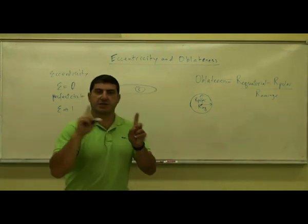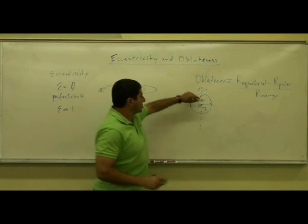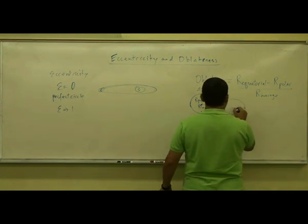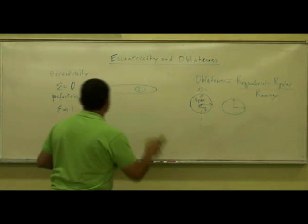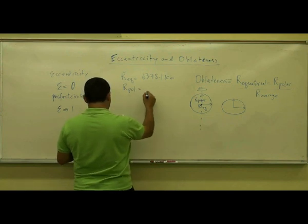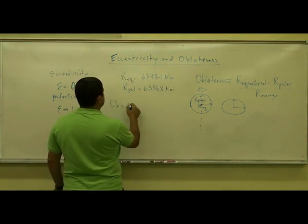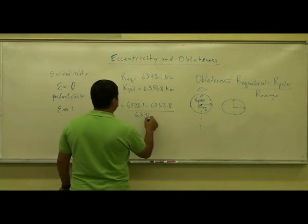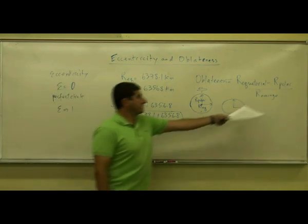Most planets are spinning about their axis, so what ends up happening is the equatorial radius bulges outward, the polar radius is smaller, and the planet looks more oblate in reality. So the equatorial radius ends up being bigger. For the Earth, the equatorial radius is 6,378.1 kilometers, and the polar radius is 6,356.8 kilometers. The calculation is 6,378.1 minus 6,356.8, divided by the average of the two, divided by 2.